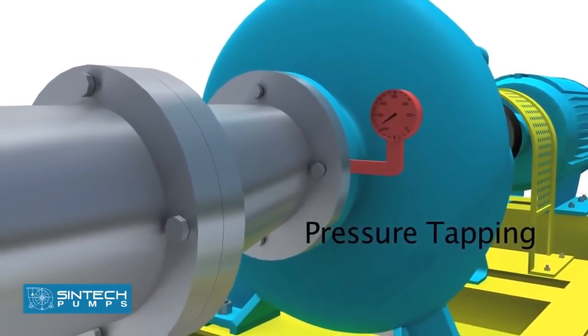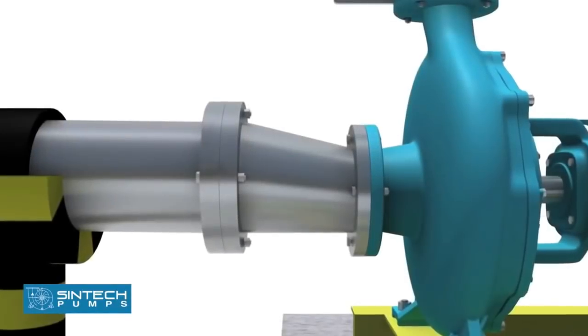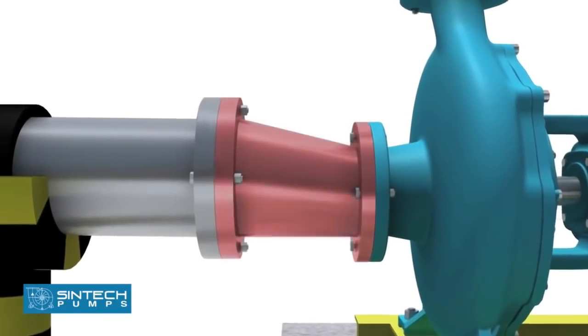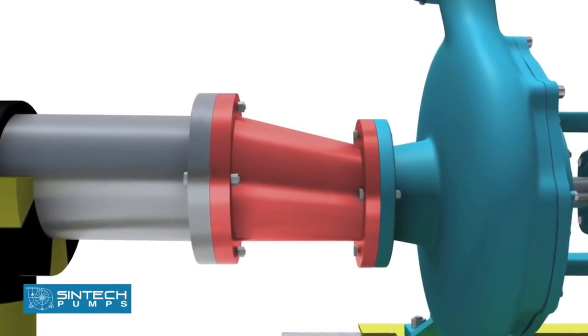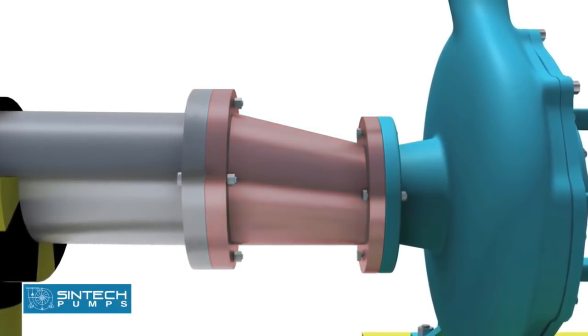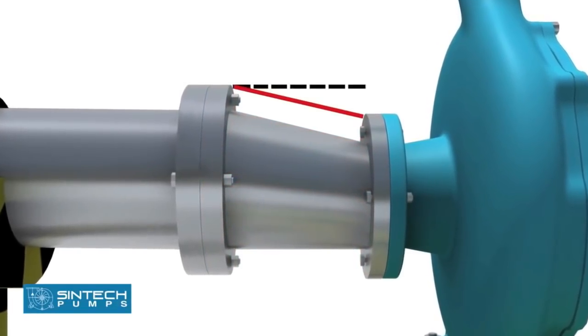There should be a tapping provided for installing a pressure gauge in the suction line. The reducer joining the straight length of the pipe in the pump line should be an eccentric reducer with the inclined side of the reducer as the top side.